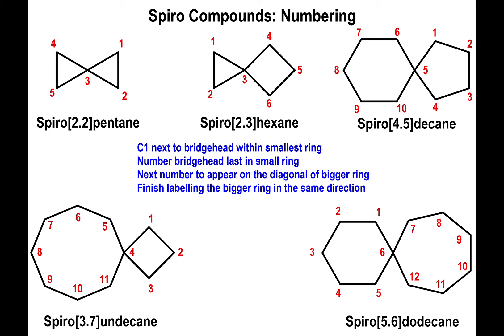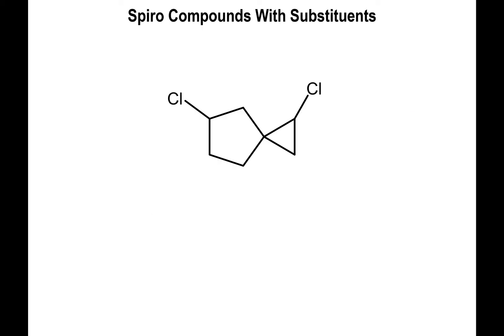This is a little different from what we did for cycloalkanes, so be careful not to confuse one with the other — these fused ring systems are a different beast altogether. Now let's look at an example involving substituents.